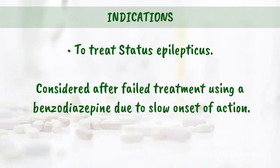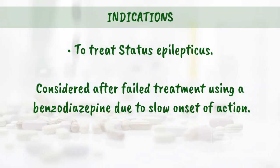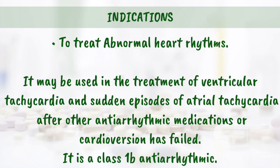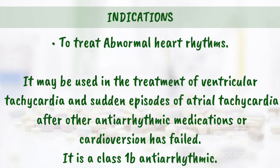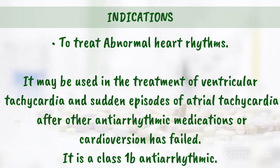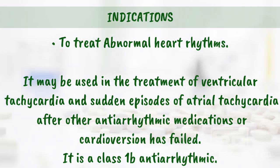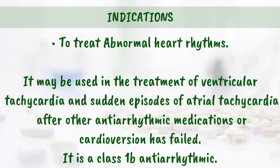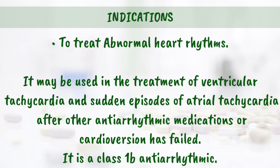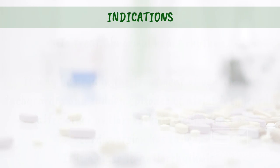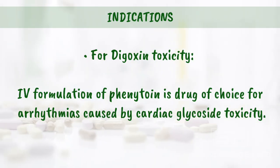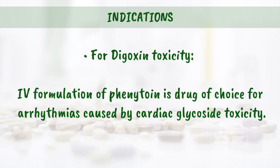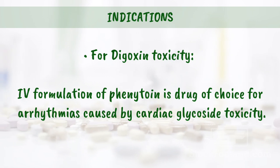Phenytoin is used to treat status epilepticus, considered after failed treatment using a benzodiazepine due to slow onset of action. It may also be used to treat abnormal heart rhythms, including ventricular tachycardia and sudden episodes of atrial tachycardia after other antiarrhythmic medications or cardioversion has failed. It is a Class 1b antiarrhythmic, and is the drug of choice for arrhythmias caused by cardiac glycoside toxicity.